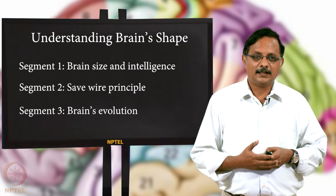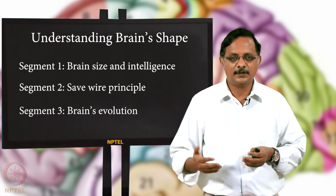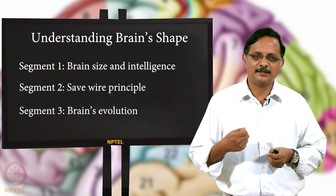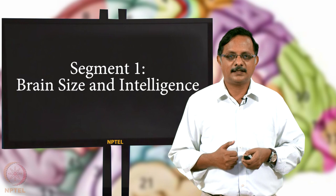In the third segment we will study brain evolution — looking at the nervous systems of very simple creatures and going all the way through invertebrates, vertebrates, mammals, and finally humans. We will see how the brain has evolved and how a simple structural principle, the save wire principle, can explain many features of brain evolution.